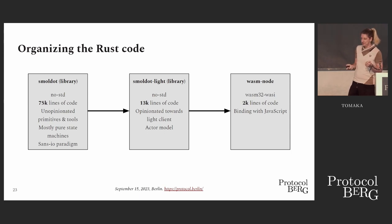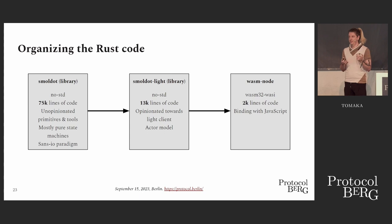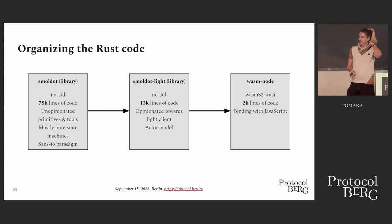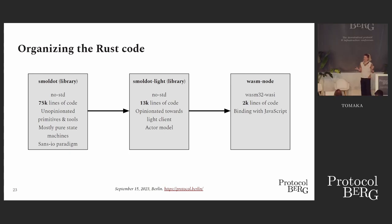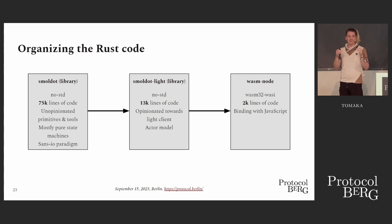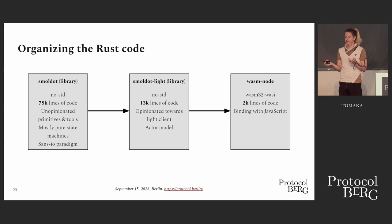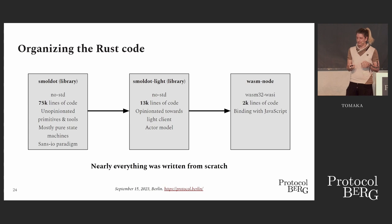Then you have a library called smoldot-light, also no-std, but more opinionated towards light clients — not state machines primarily, but actors. At the top, the actual wasm node compiled to WebAssembly. I used wasm32-wasi as the target — it has fine bindings to get time, randomness, etc. I recently changed that to wasm32-unknown-unknown, but wasi is very convenient to start since you can delegate randomness and time to libraries. Nearly everything was written from scratch.